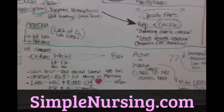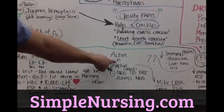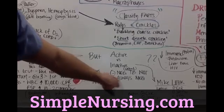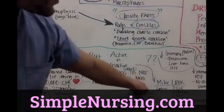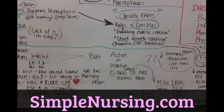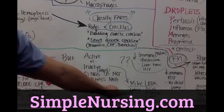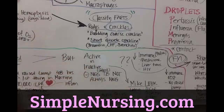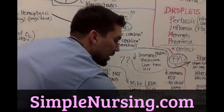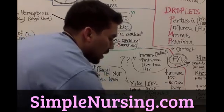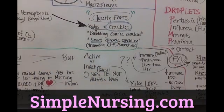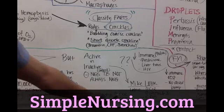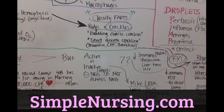Active versus inactive — also called latent — negative tuberculosis screening does not always mean negative. For it to be negative in the latent phase, you have to have a negative chest x-ray, negative sputum cultures times 3, and a possible positive PPD test. For active TB, you're going to have a positive chest x-ray and a positive sputum test.